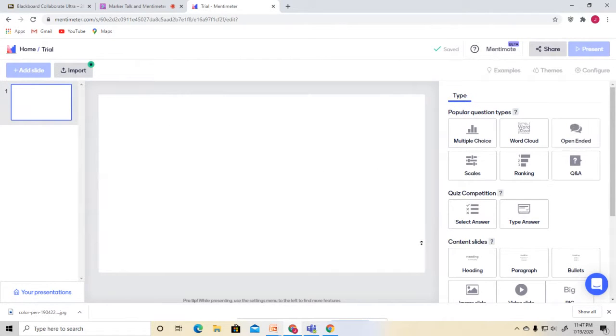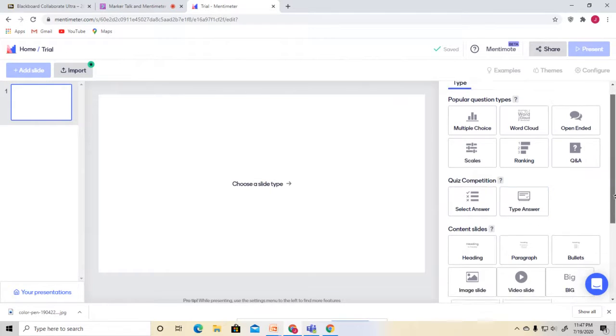There's my new presentation. You have different types of questions you can ask. You can have multiple choice questions. The one that I really like is word cloud. To me, this is very similar to what the students would do when they walk around the room. I'll show you examples of how I've used that. You can use scales, ranking, Q&A, quiz competition, types of answers.